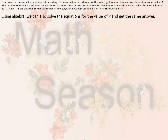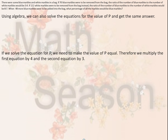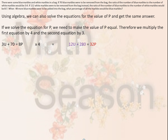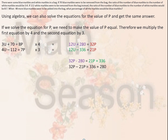Using algebra, we can also solve the equations for the value of p and get the same answer. To make the value of u equal, we multiply the first equation by 4 and the second by 3. This gives us 12u plus 280 equals 32p, and 12u minus 336 equals 21p. Setting these up: 32p minus 280 equals 21p plus 336. Solving for p, we get 11p equals 616, so p equals 56.